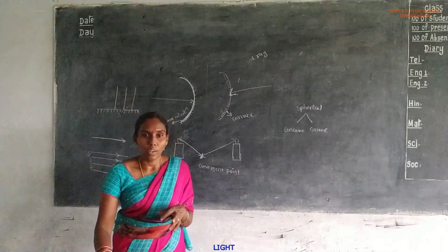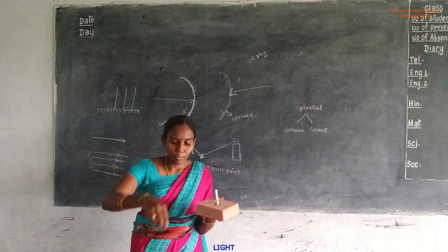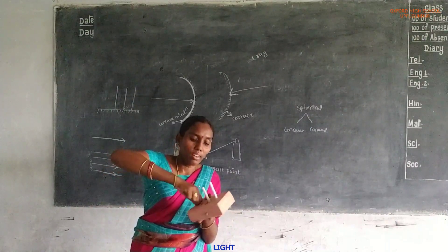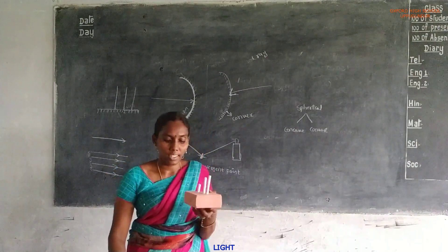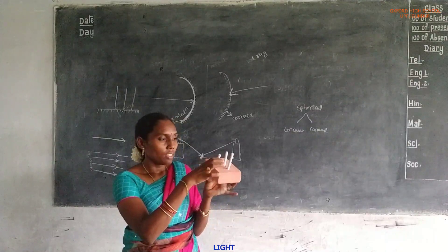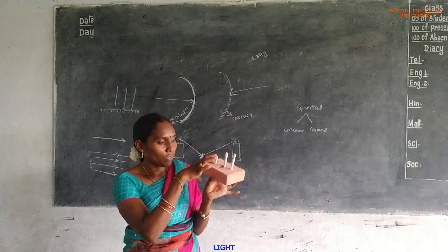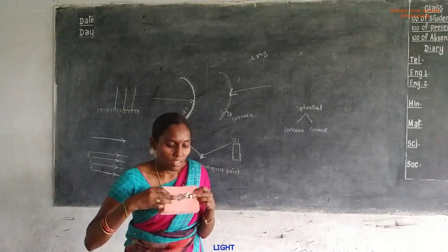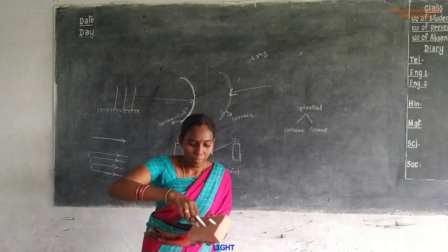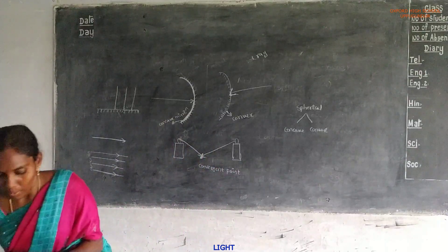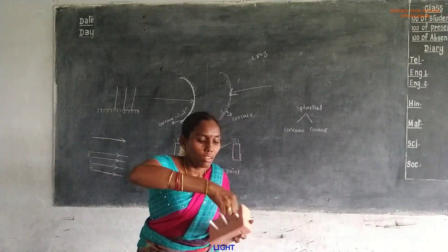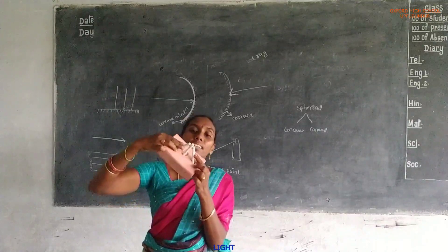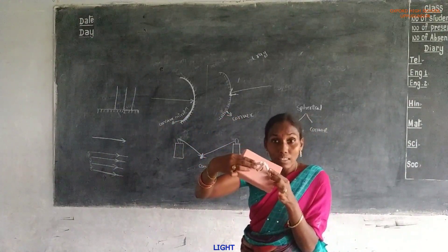If three rays are moving from different sources but meet at the same point, those are called the convergent beam. This is one light ray, this is the second light ray, and this is the third light ray — coming from point sources and meeting at a certain point. These are convergent.